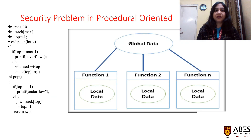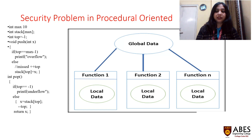There is a security problem in this approach. If we declare any data as global data, then all functions can access that global data in the procedure-oriented approach. This problem is resolved in object-oriented approach with the help of classes and objects. For example, we can make one global variable called 'top' and it will be accessed by both the push function and the pop function — that is the security issue.